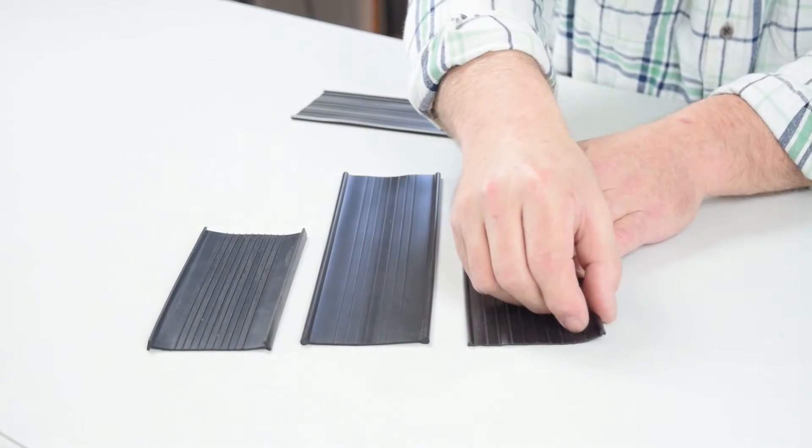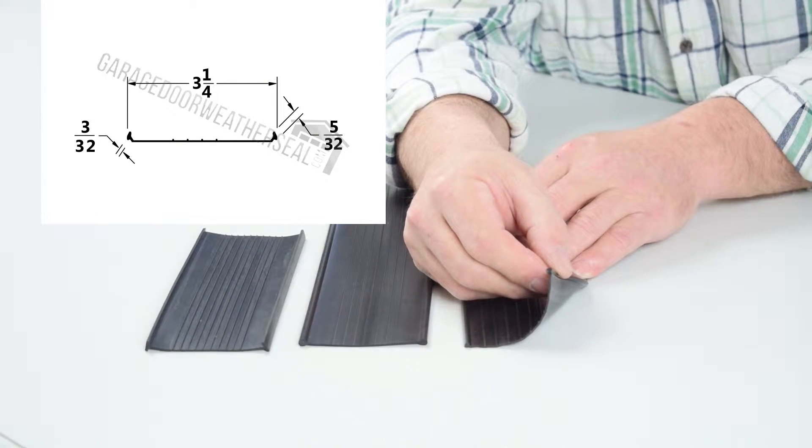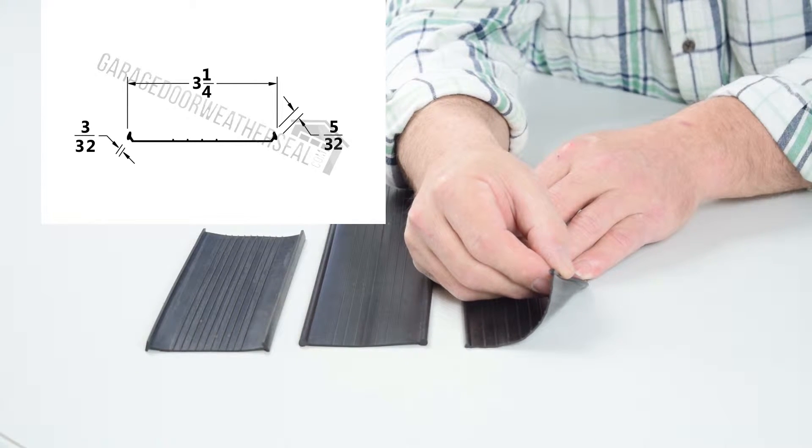Now we can start taking a closer look at that bottom weather seal. Wayne Dalton does use several kinds, but the most common they use is this type right here. It's what we're going to call a bead seal, but it's not a fully round bead seal and it's not a T-seal either. It's kind of a half mixture of a bead and a T.